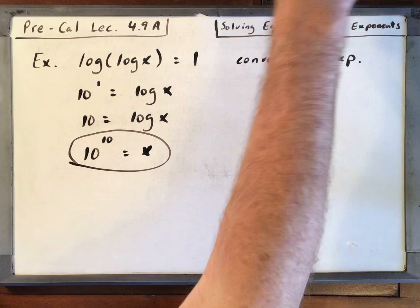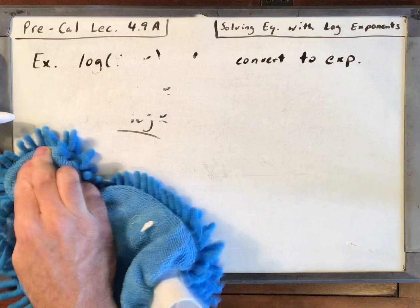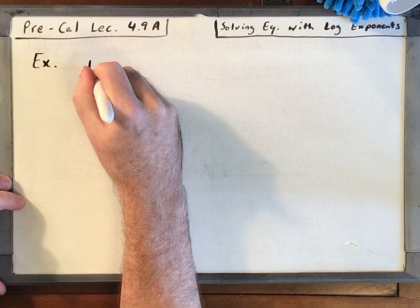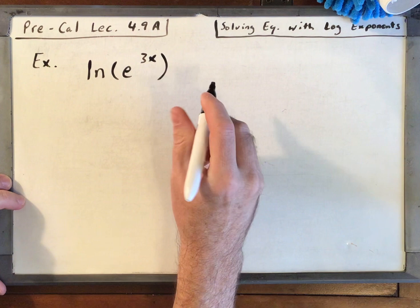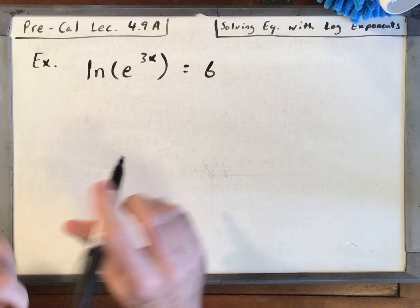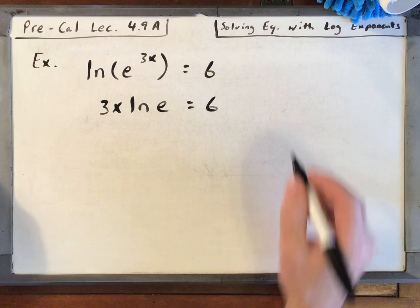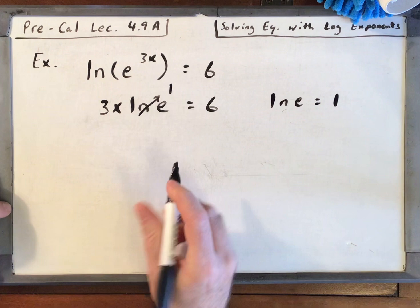Let's get one more. We've got the natural log of e to the 3x is equal to 6. Well, let's use the properties of logs. Bring that 3x out front of the natural log. So we've got 3x natural log of e is equal to 6. What's the natural log of e? It's 1. So 3x equals 6, x equals 2.